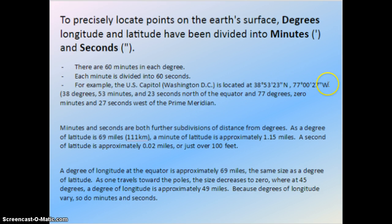So we use our north and west, these are simply relative to the equator and prime meridian. Minutes and seconds are further subdivisions of degrees, and as each degree of latitude is 69 miles, or 111 kilometers, a minute of latitude is roughly 1.15 miles, and a second of latitude is 0.02 miles, or just over 100 feet.